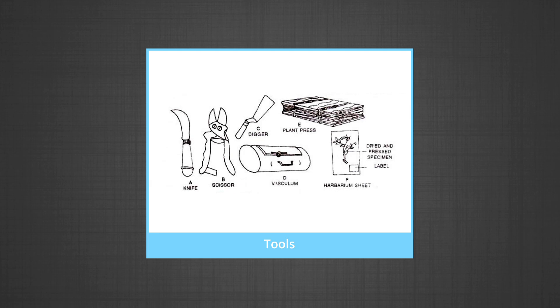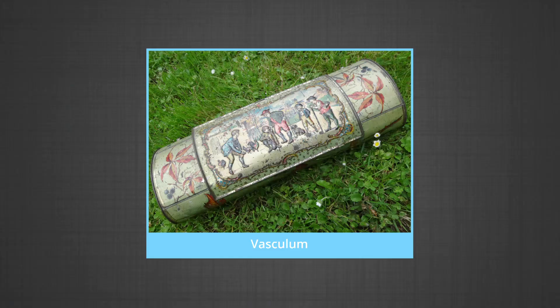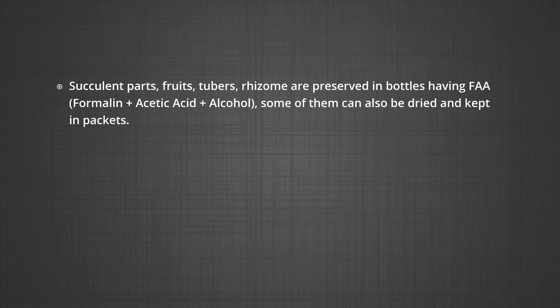Herbarium technique: the collection of specimens requires regular field visits. One must gather information about the place, habitat, season and time of collection. Simple tools are needed such as a digger for digging roots, scissors for cutting twigs, a knife for woody twigs, and a pole with hook for collecting parts of tall trees. Vasculum or polythene bags are used to temporarily store fresh shoots to avoid loss of moisture. Vasculum is a box of about 40 by 60 cm, 20 cm in width and 25 cm in depth. Succulent plants, fruits, tubers and rhizomes are preserved in bottles containing FAA — formalin, acetic acid and alcohol.